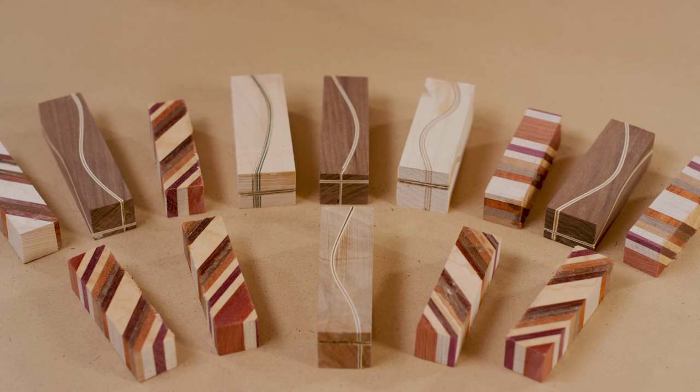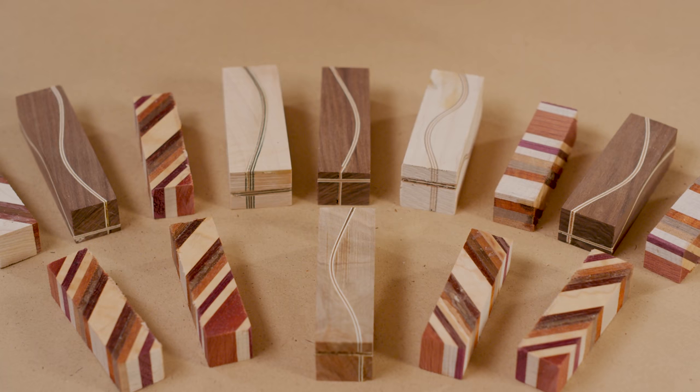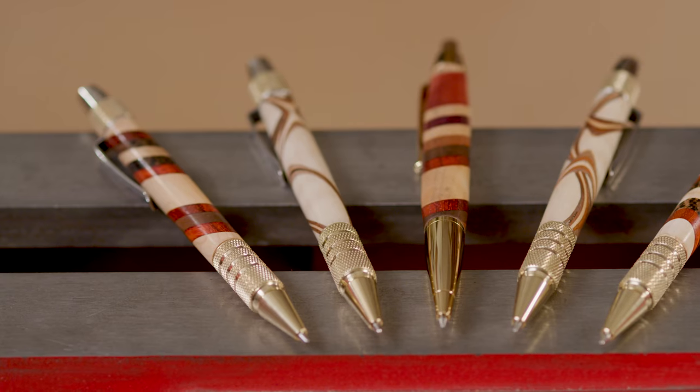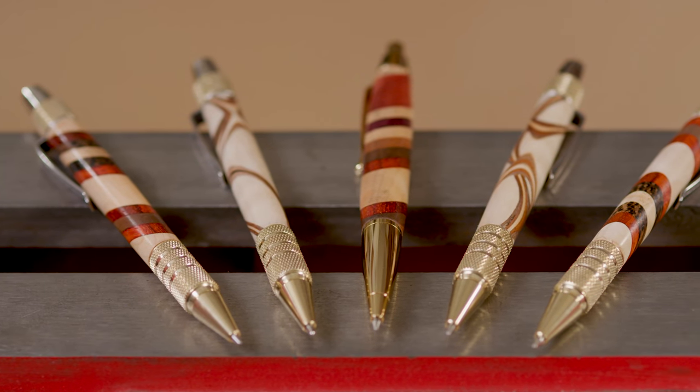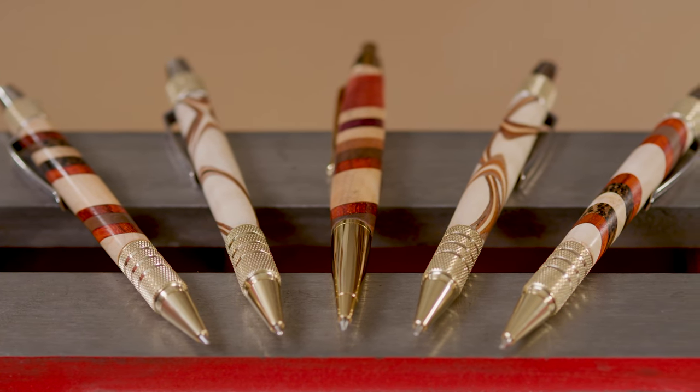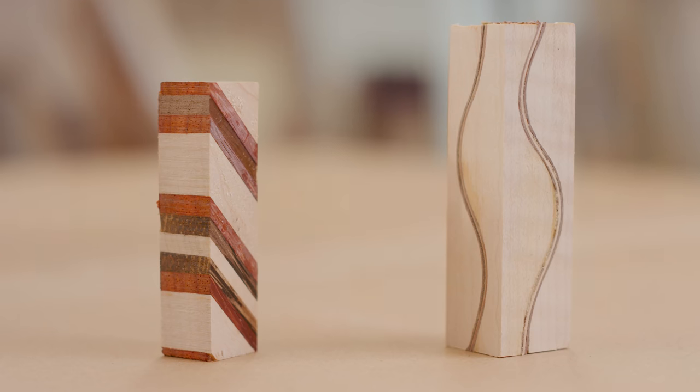Express your style and creativity by designing and laminating your own eye-catching pen blanks. Laminating your own pen blanks allows you to put to use small pieces of exotic scrap wood that might otherwise go to waste. Two basic types of design consist of angled and simple curved laminations. Mastering the process of these two laminations offers endless possibilities for creating your own designs.